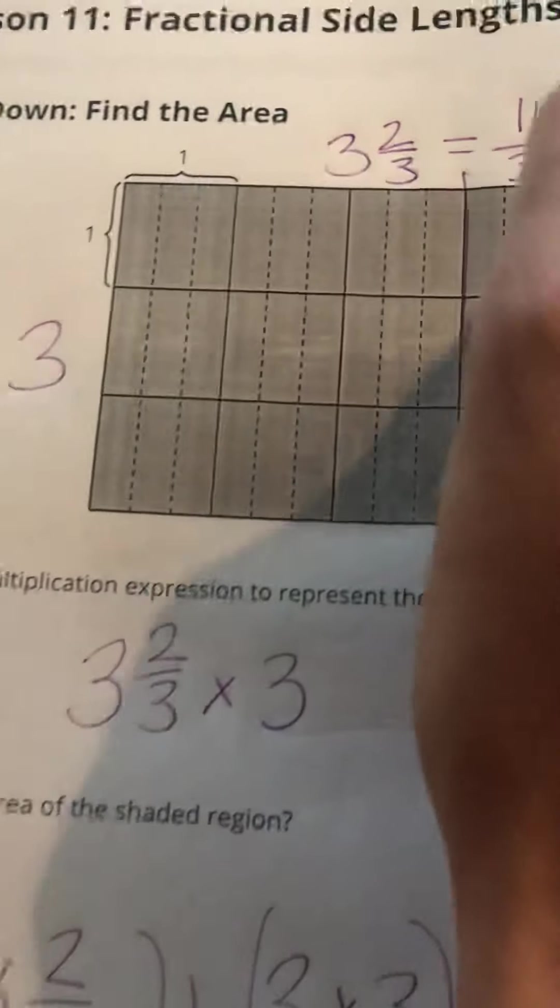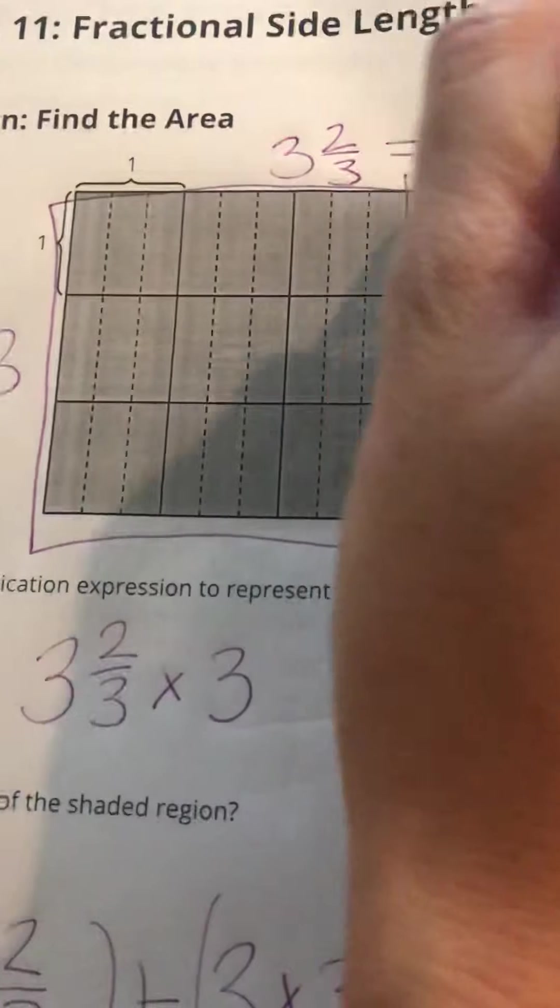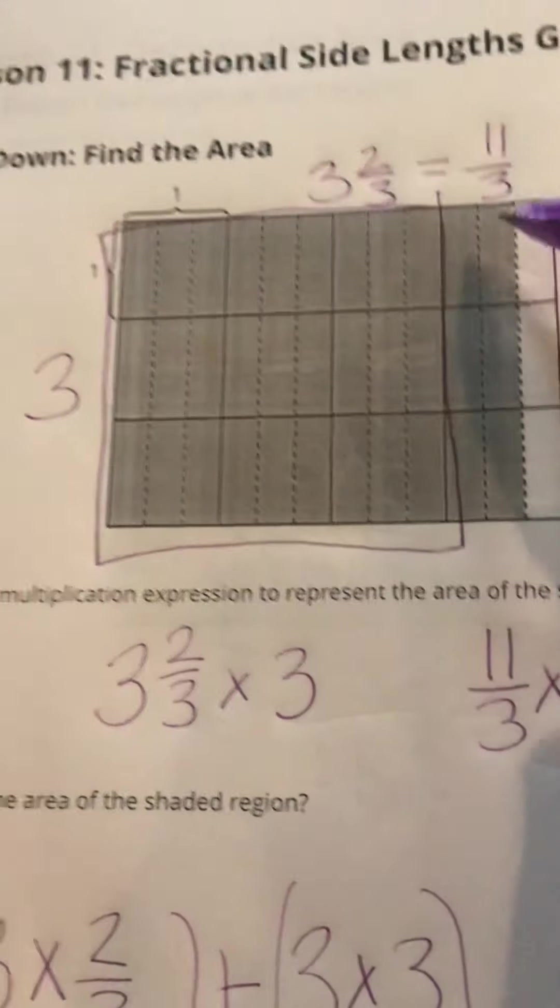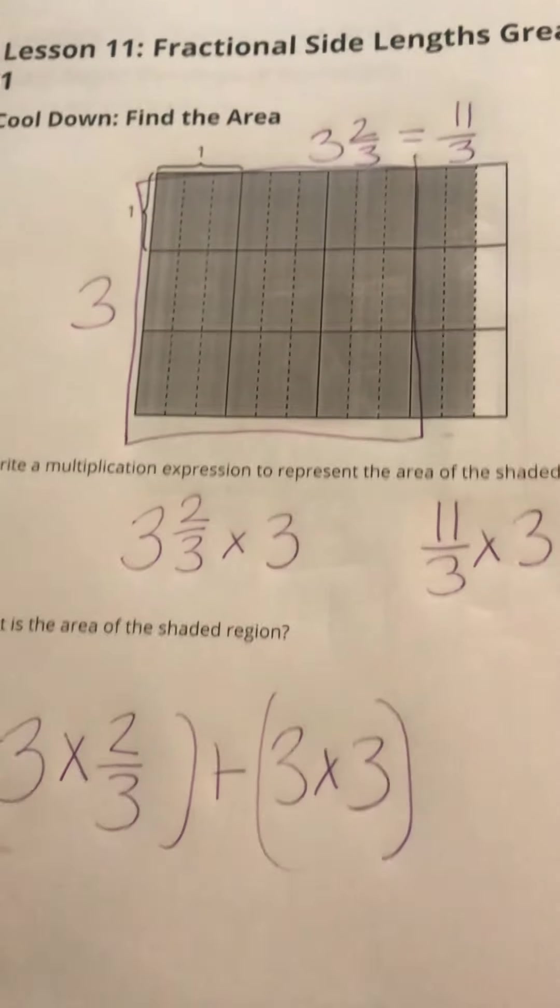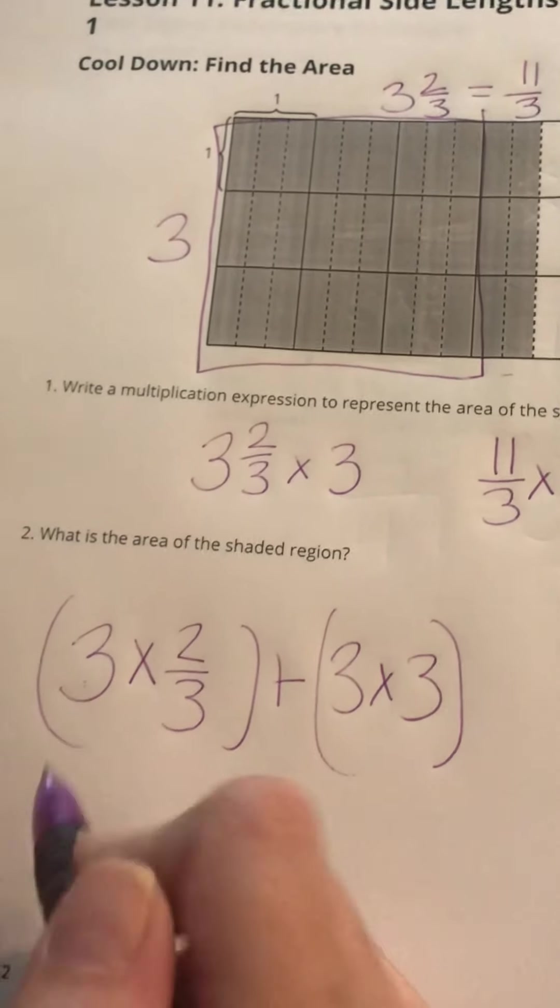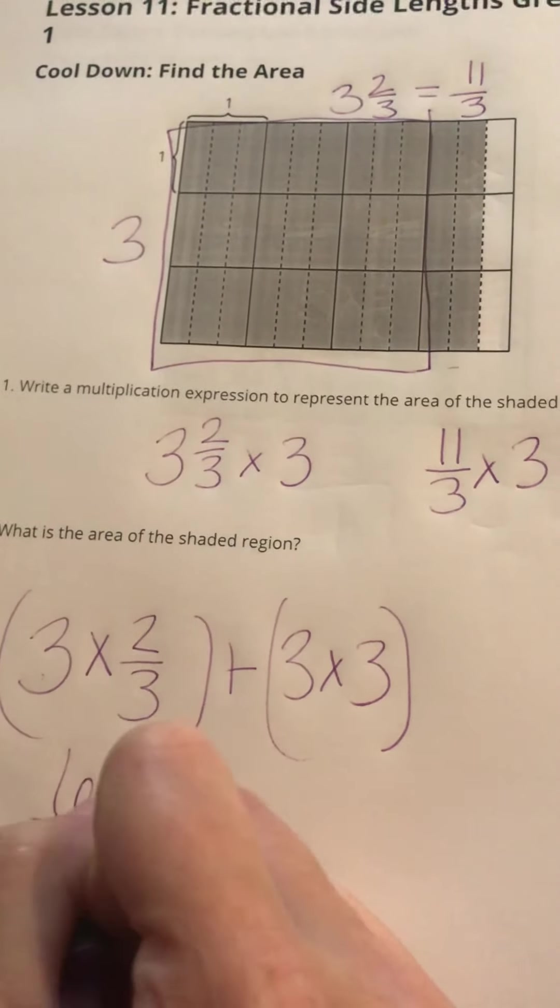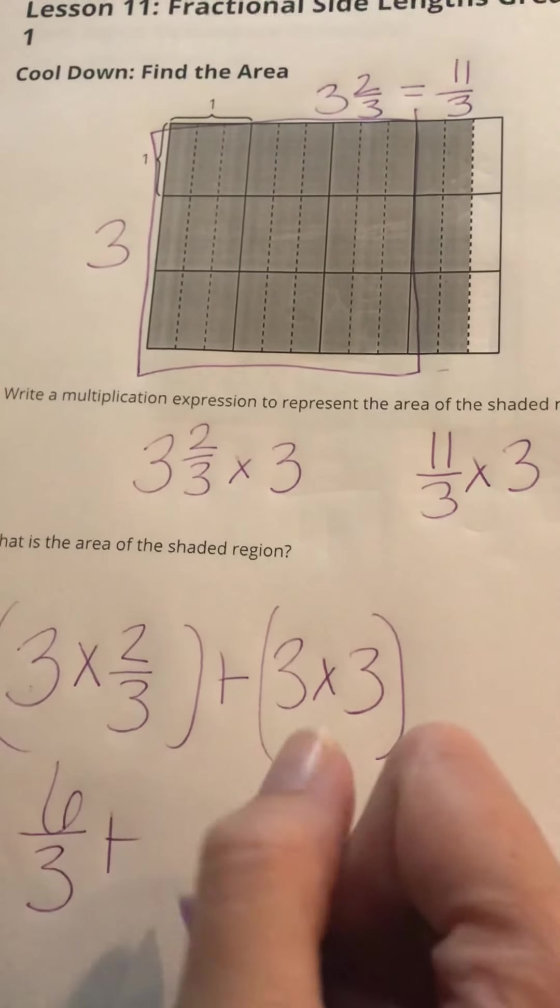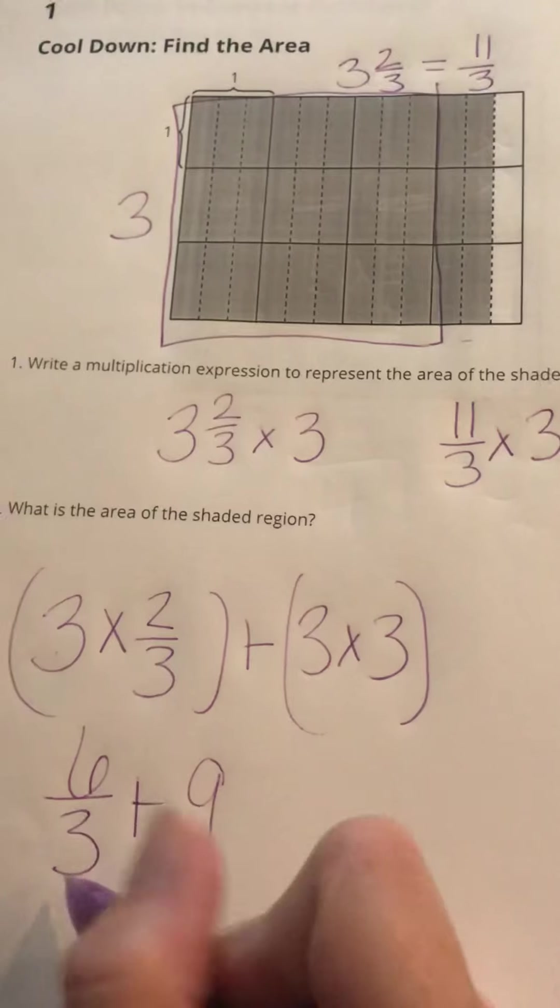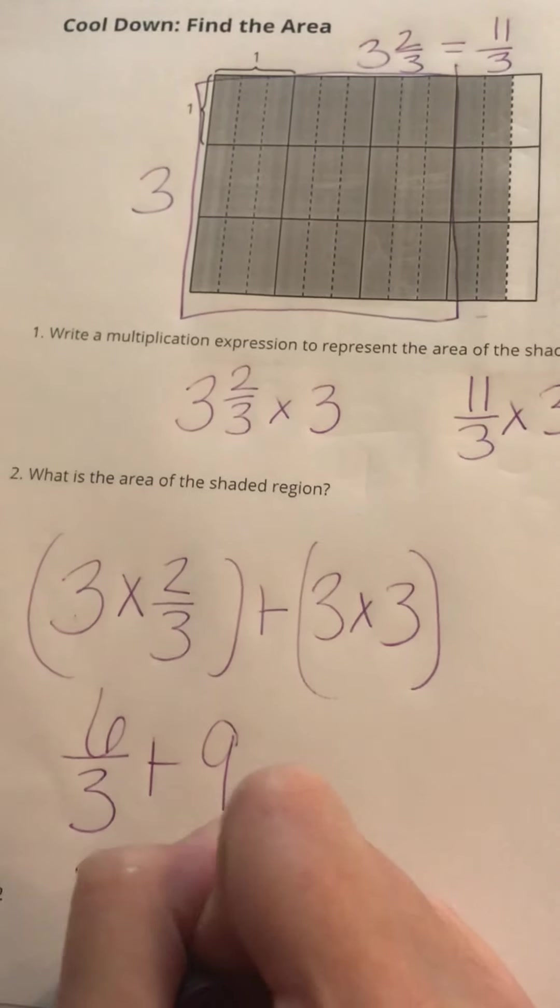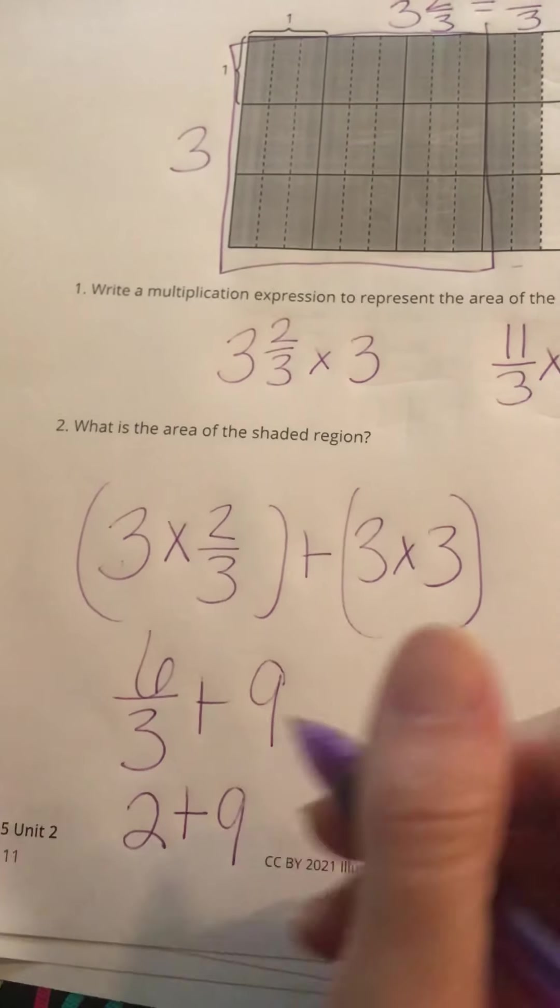So when I work this out, 3 times 2/3 gives me 6/3 plus 3 times 3, which gives me 9. And then 6/3 would be the same thing as 2, so 2 plus 9 is going to give me 11 here.